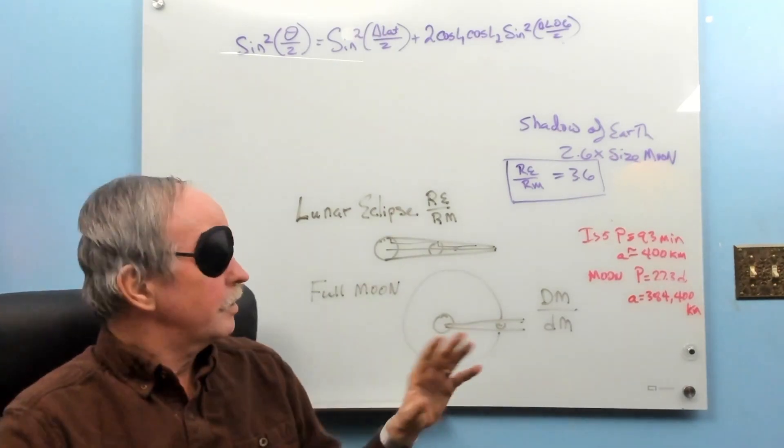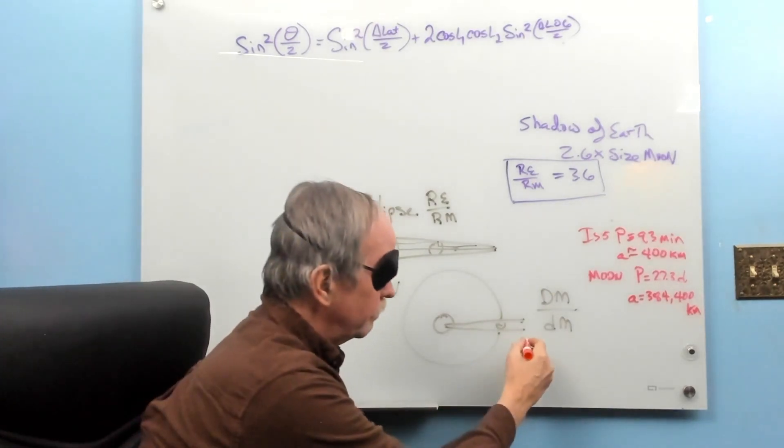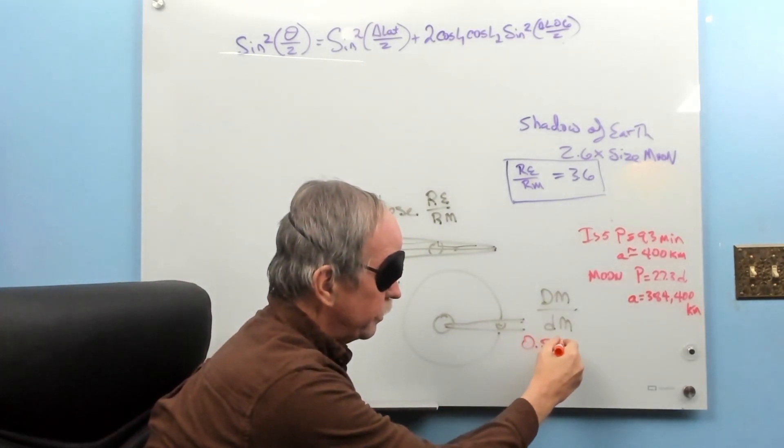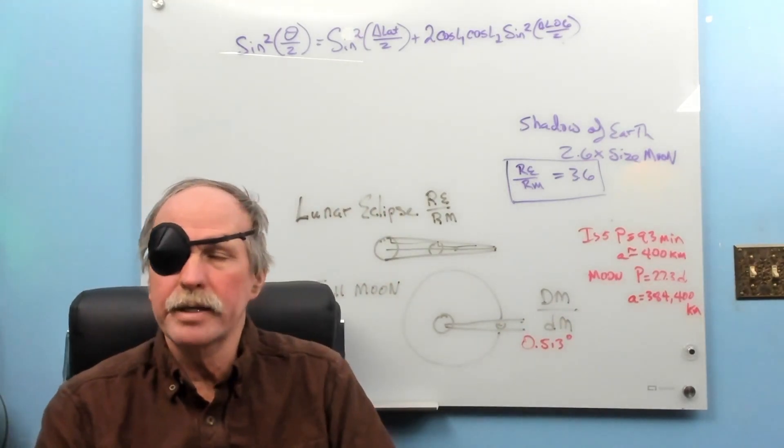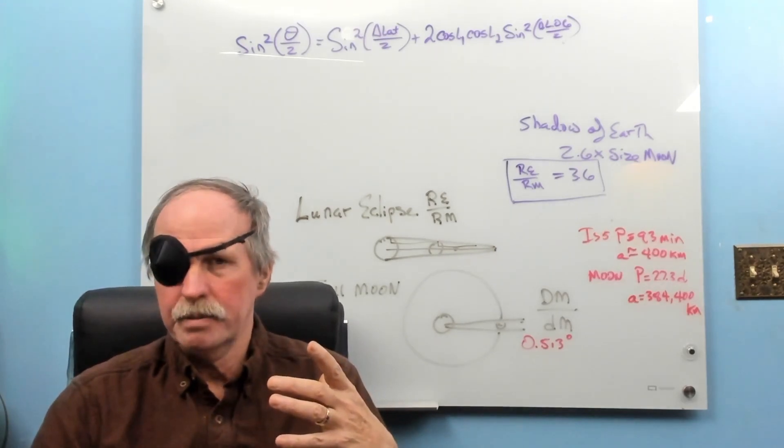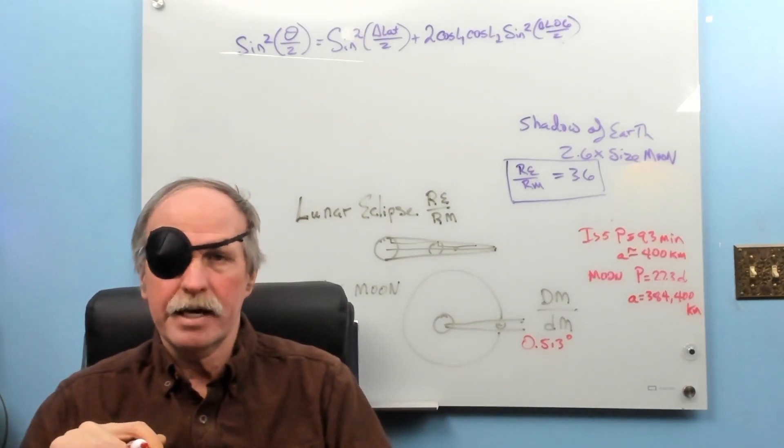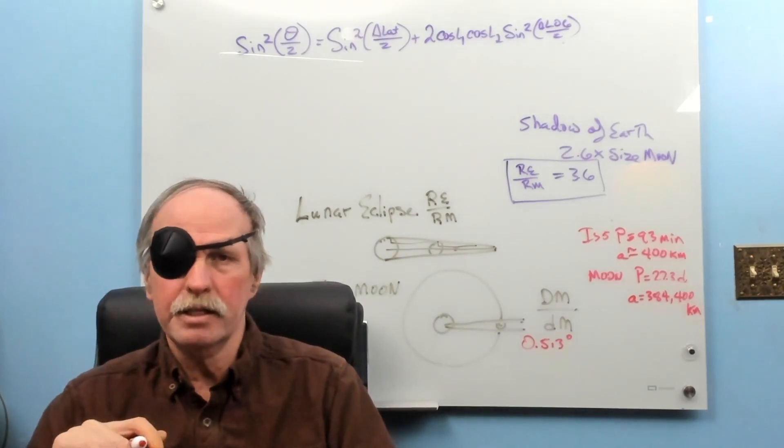Next, he was able to look at the full Moon and look at the angular size of the Moon, which is 0.513 degrees. And as a result, he was able to relate the diameter of the Moon to the distance from the Earth to the Moon. If you would like to see the actual mathematics behind all of that, have a look at the two videos I've linked in the description.